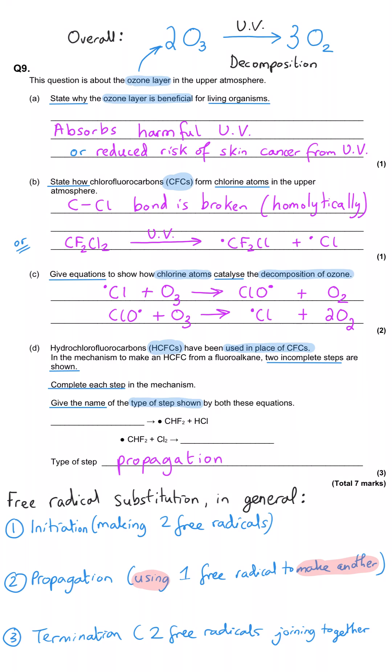The other option in this mechanism, which overall is called free radical substitution, is there are initiation steps, which is where something without free radicals turns into two free radical products.